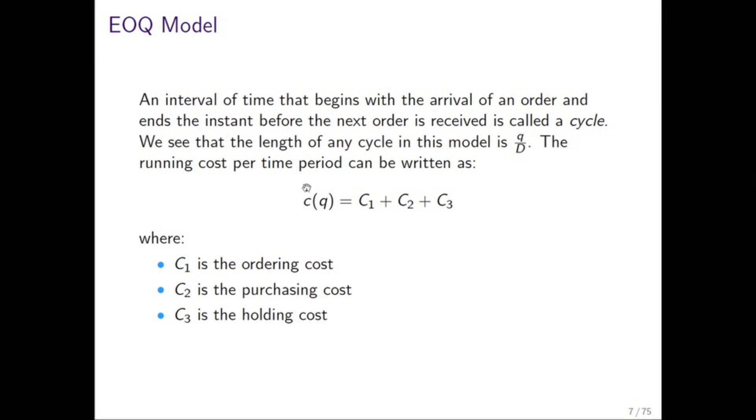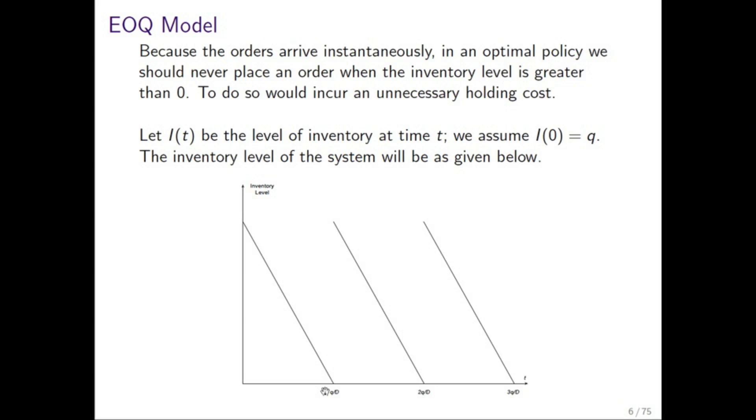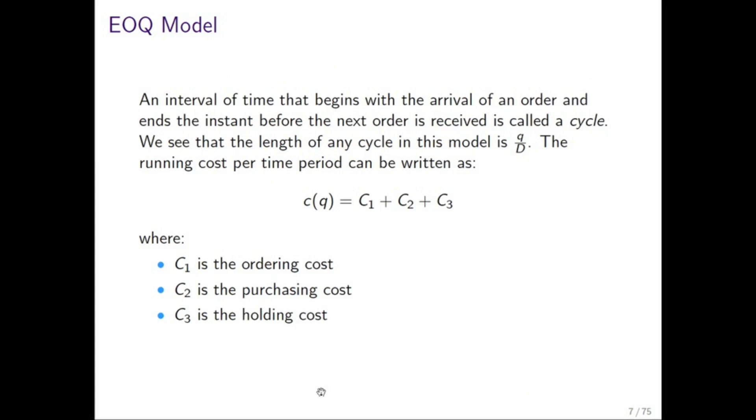So then we want to say, what is the cost as a function of that quantity? Well, it can be written as the sum of three costs: the cost associated with ordering, the cost associated with purchasing, and the cost associated with holding. Now we assume that the cost we're looking at is the cost per time period. If I just skip back to the previous slide, we know that a cycle is going to be of length Q over D, so we have to keep that in mind when we're looking at the cost per time period.